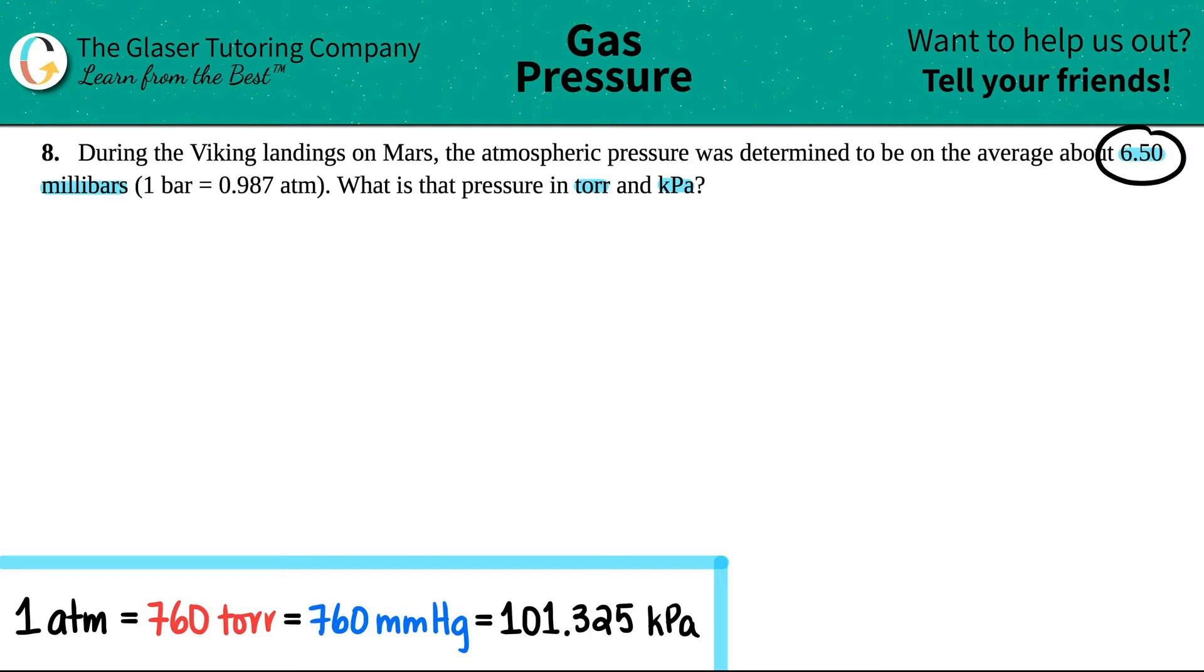Okay, so in this case they gave us a number that we have to convert. They told us that on this Mars landing the pressure was 6.5 millibars and we just need to convert this into torr and kilopascals. So let's work with torr first.